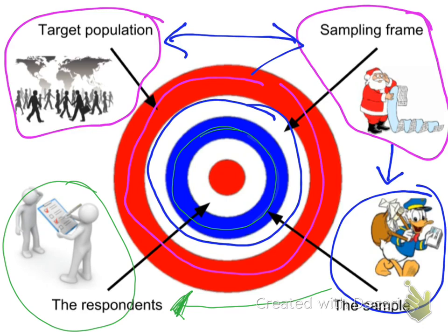So my respondents are then those that actually fill in that survey and give me data. So that is then my slightly more inner layer within this target diagram.